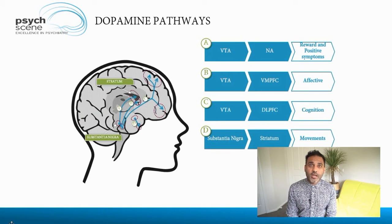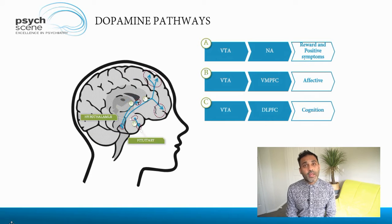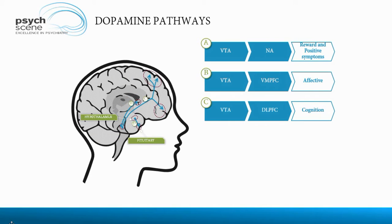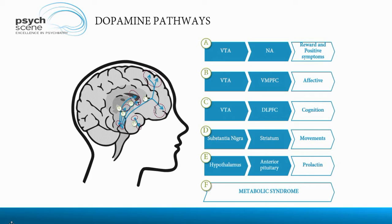The substantia nigra connections to the striatum in the basal ganglia are responsible for movements. Then we have the hypothalamic connections to the anterior pituitary that controls prolactin secretion, the lactating hormone. Finally, it's very important to think about metabolic syndrome. Although we're not specifically looking at dopamine-regulated pathways here, when thinking about a patient with schizophrenia, it is helpful to deconstruct the picture into these pathways and examine them independently.